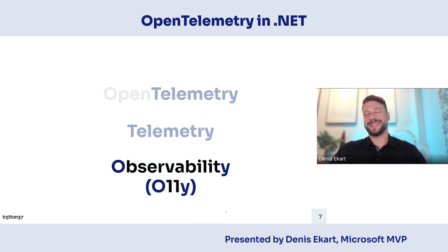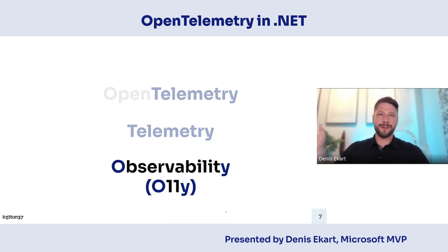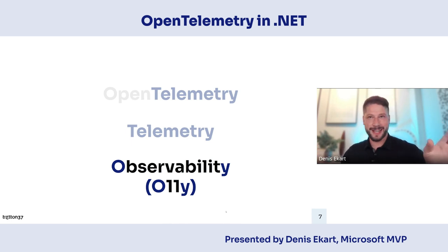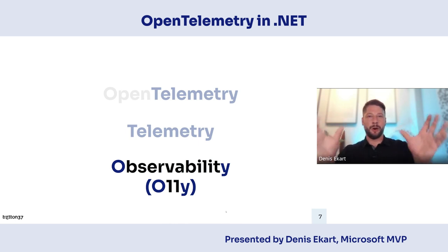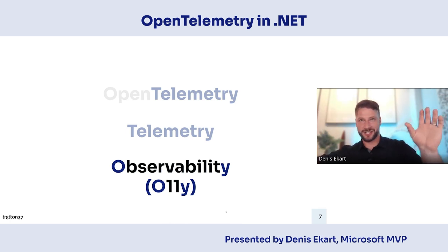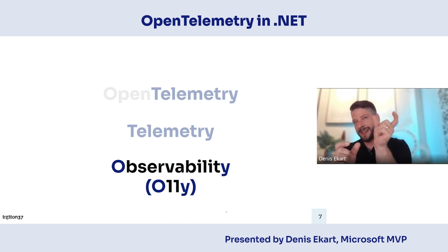One more really cool thing I'm ashamed to say I just discovered a couple of months ago: if you've ever seen O11Y, it's basically a shorthand for observability — a numeronym. You take the first letter, the last letter, and count the letters in between: O-11-Y. It goes to show how lazy us developers are. If we put it between Kubernetes (K8S) and internationalization (I18N), we're sort of in the middle of lazy — right in the middle.